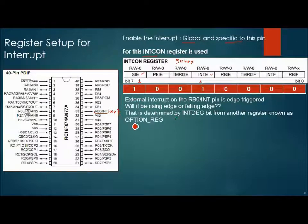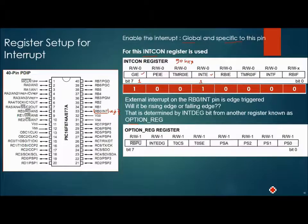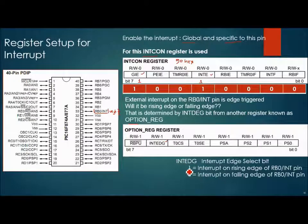The name of the register is OPTION_REG. Inside the OPTION_REG there is a bit INTEDG. If you set it, then interrupt occurs on rising edge else the interrupt occurs on falling edge. We will keep the default value of this register and load 0 hex. Means for our example it will work on falling edge.